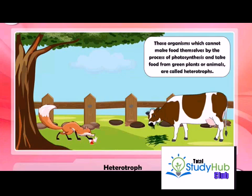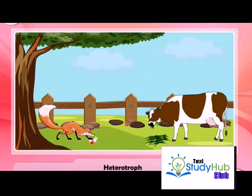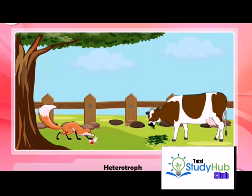Heterotrophs are those organisms which cannot make food themselves by the process of photosynthesis and take food from green plants or animals. Their mode of nutrition is called heterotrophic. All non-green plants and animals, including human beings, are heterotrophs.